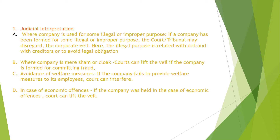The second case is where the company is a mere sham — they form and register the company but the aim is to do some fraudulent activity, so in that case the corporate veil can be lifted. The third condition is avoidance of welfare measures — if the company fails to provide welfare measures to its employees, the court can intervene. Then in case of economic offenses, if the company is convicted of any economic offense, the court can lift the veil.